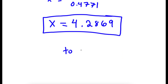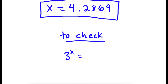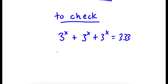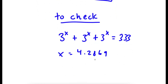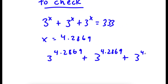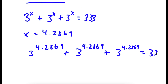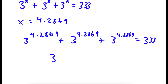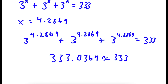Now to check: 3 to the power of x plus 3 to the power of x plus 3 to the power of x is equal to 333. With x equal to 4.2869, I have 3 to the power of 4.2869 plus 3 to the power of 4.2869 plus 3 to the power of 4.2869 is equal to 333. If you add up all these, you get 333.0369, which is approximately equal to 333. So this is right.